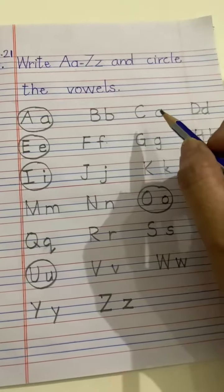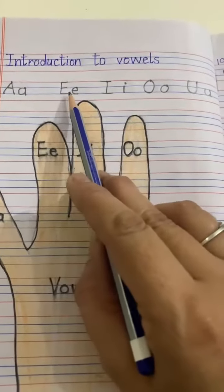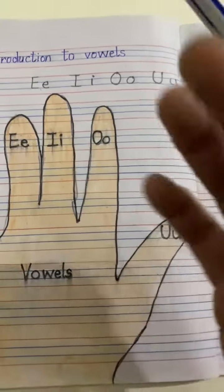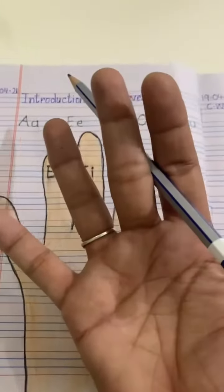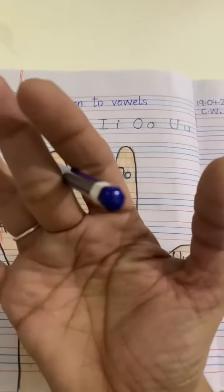As ma'am has taught you vowels. A, E, I, O, U. How many vowels? Five. A, E, I, O and U. Five vowels.